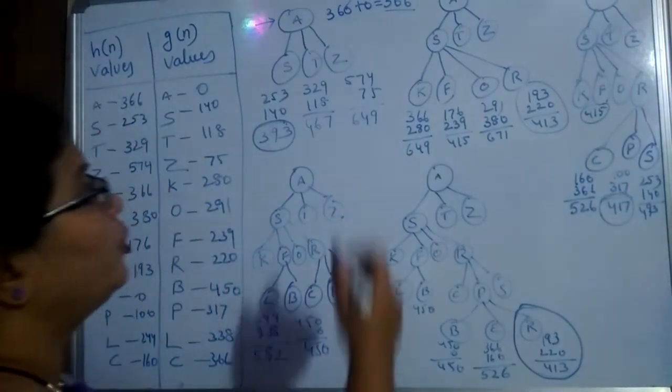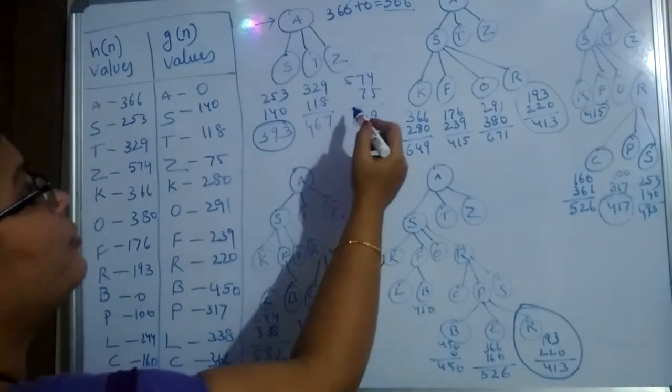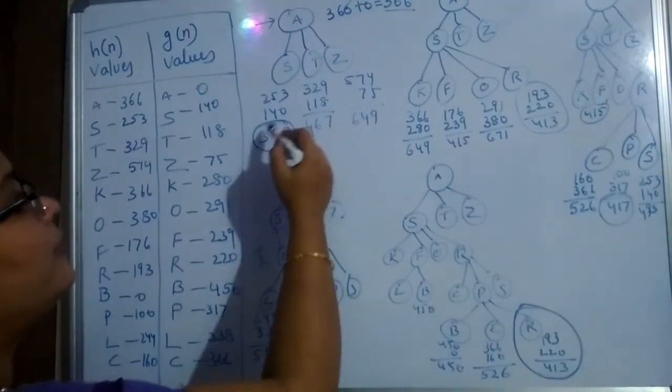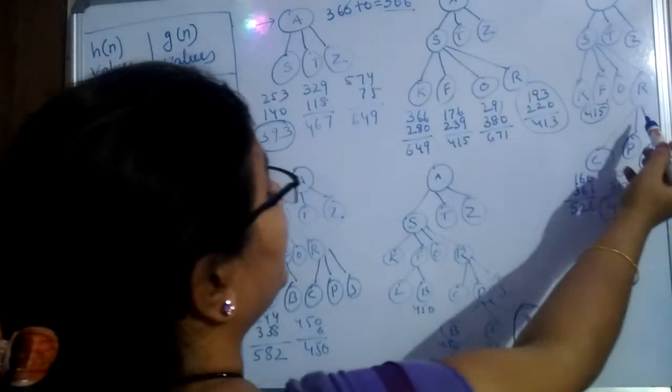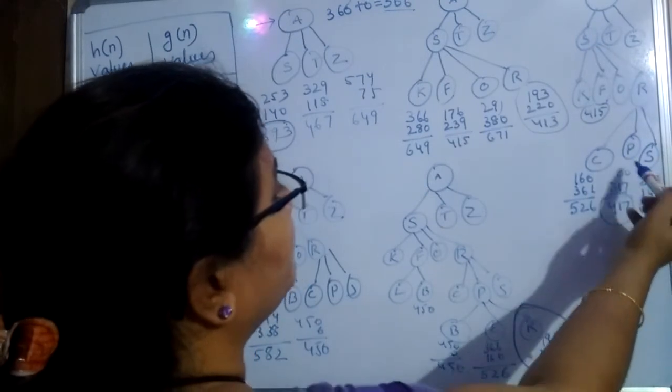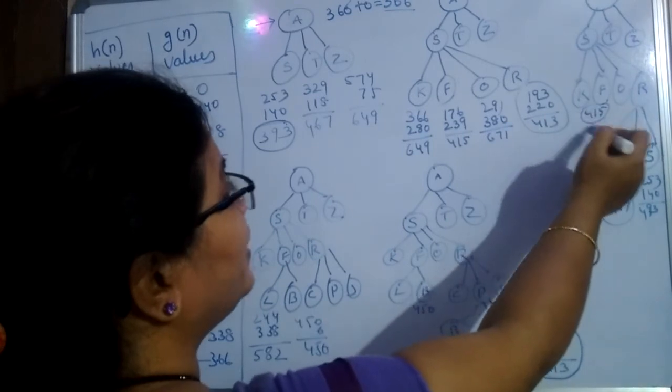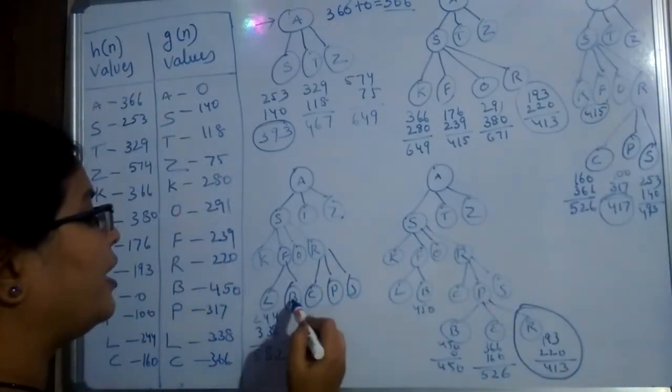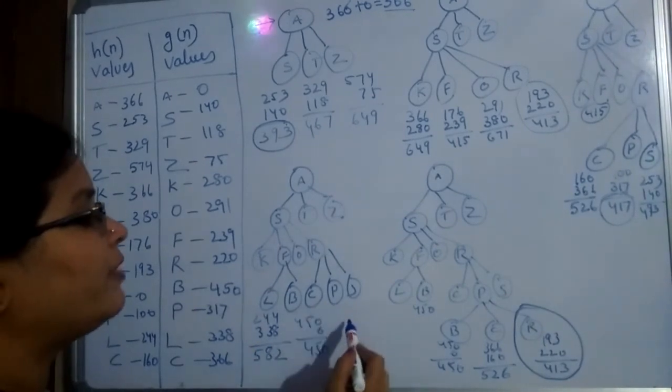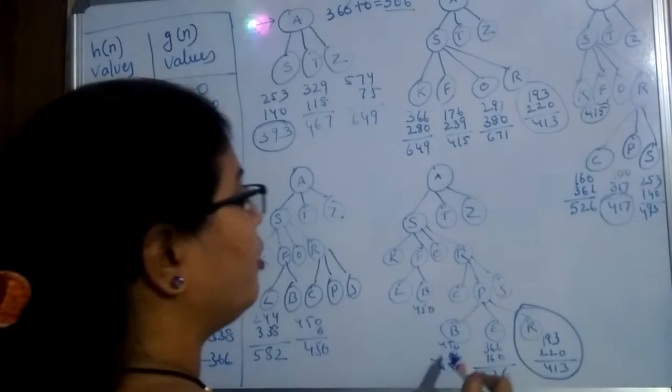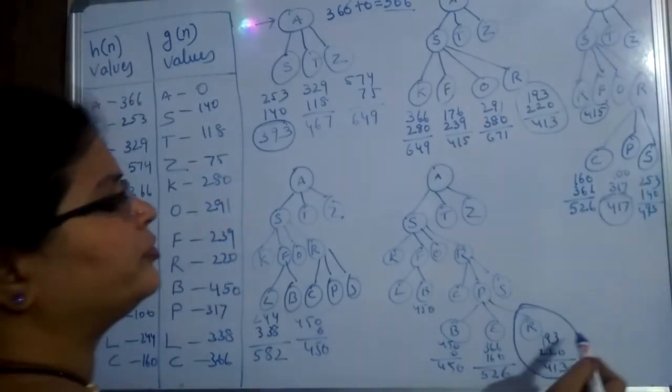Like that it expands. So once again, I will explain. At the A, S, T, Z, after calculating H of N and G of N, here we got S is the minimum value. After expanding S, I got R is the minimum value. After expanding R, I got C, P, S, and the P is the minimum value. But minimum of this, are there any existing in the previous levels? It is there, F. So I have expanded F here, that is L, B. I got 582 and 450. And then I go to the next level. I have expanded the P. I got 450, 526 and again 430. Again I need to expand the R. Like that it goes till, this is till it finds the minimum solution or till it finds the minimum thing.